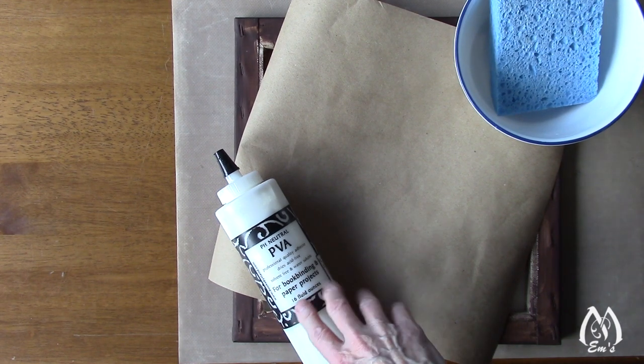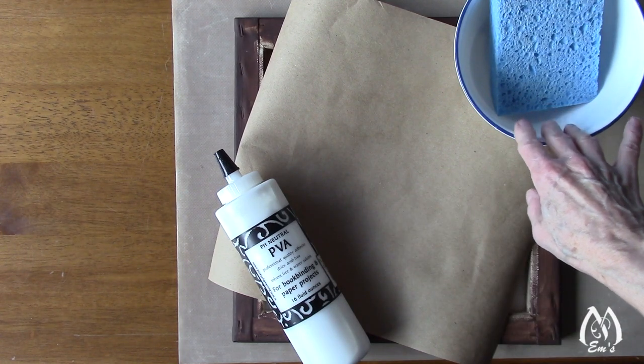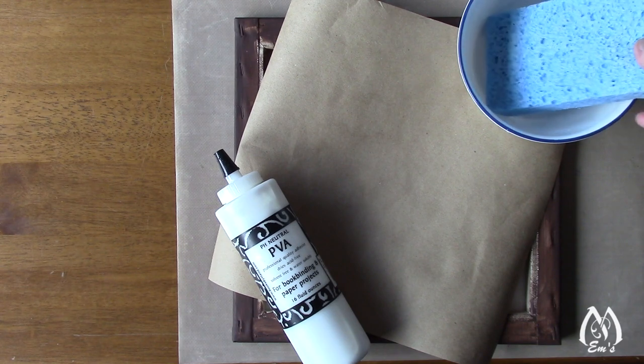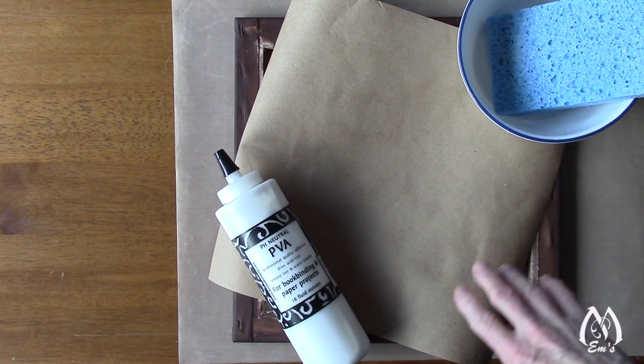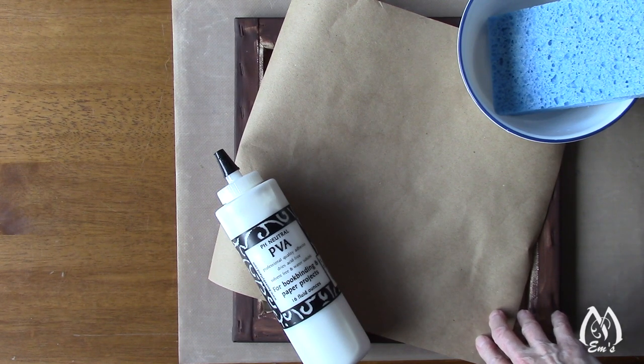For the project I'm going to use this PVA book binding glue, and then I've got a little bowl with a little bit of water and a sponge that I use for paper making.